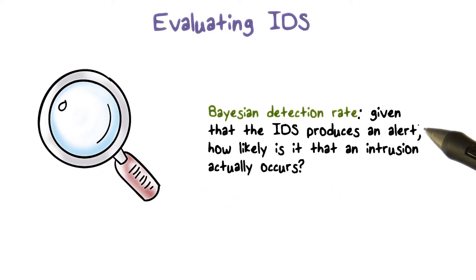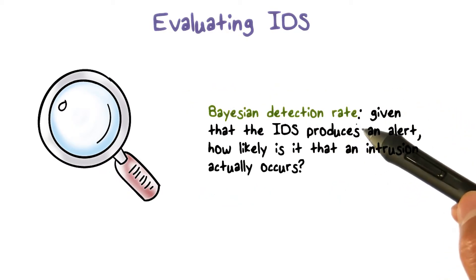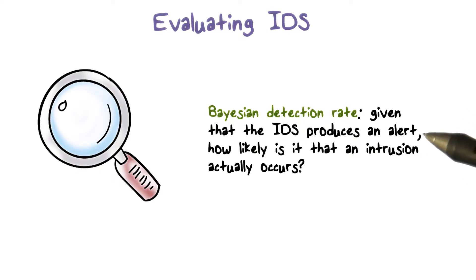And if you are a system admin, you may want to know about the Bayesian detection rate of an IDS. That is, given that the IDS has already produced an alert, how likely is it that an intrusion actually occurs in your network?